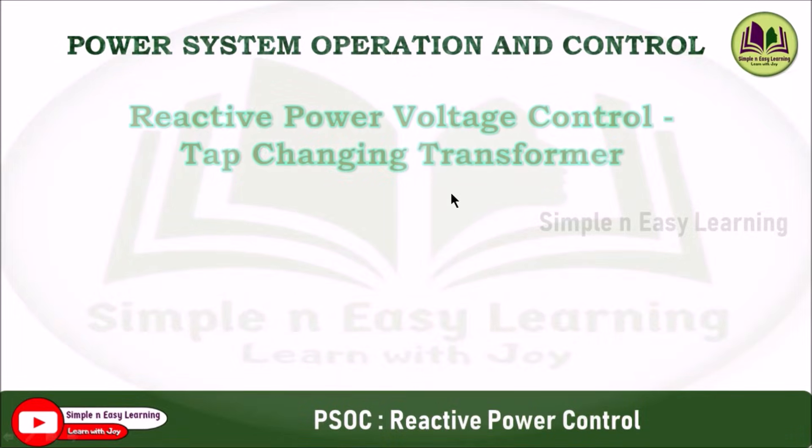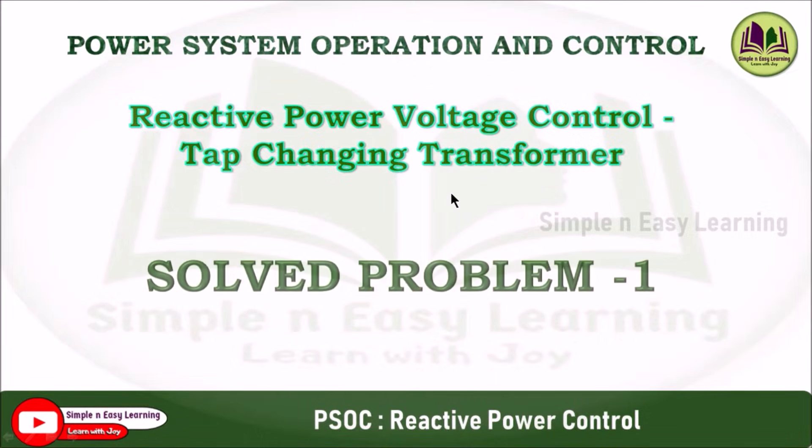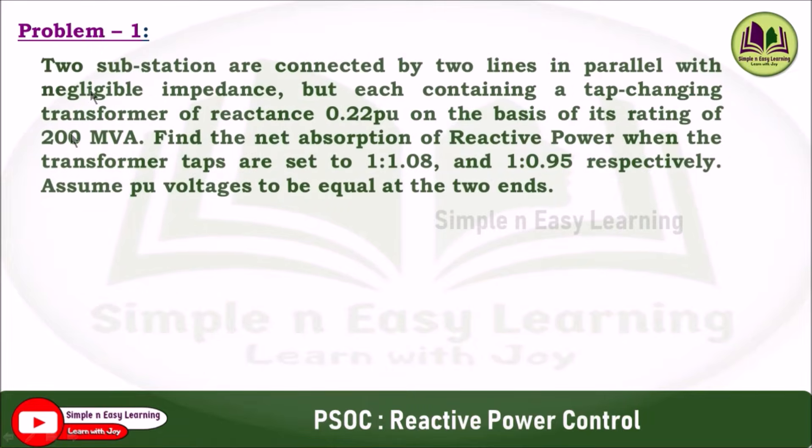Power system operation and control: tap changing transformer case, solved problem 1. Two substations are connected by two lines in parallel with negligible impedance, but each containing a tap-changing transformer of reactance 0.22 per unit on the basis of its rating of 200 MVA.